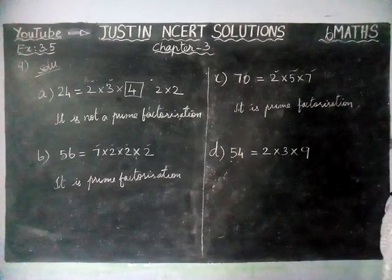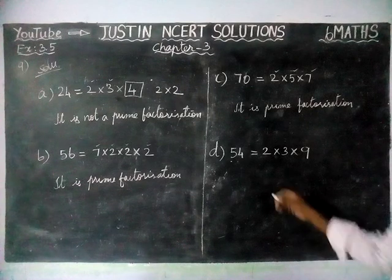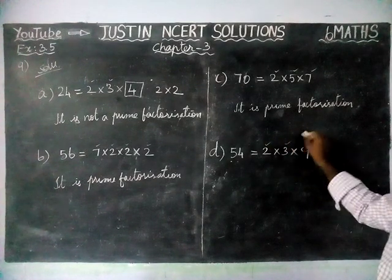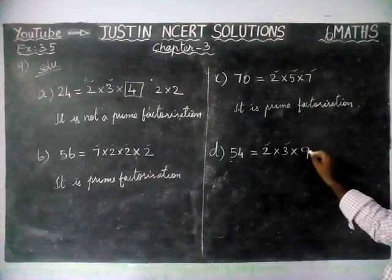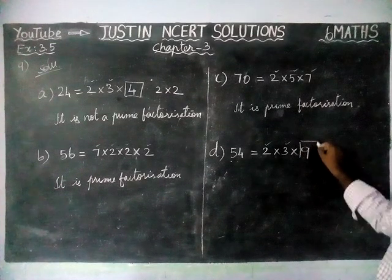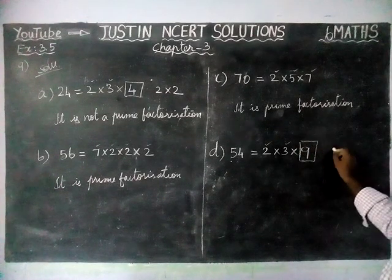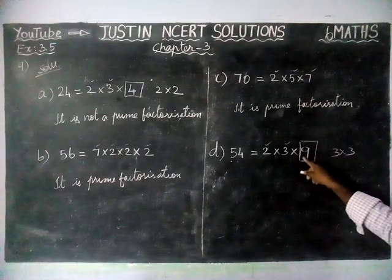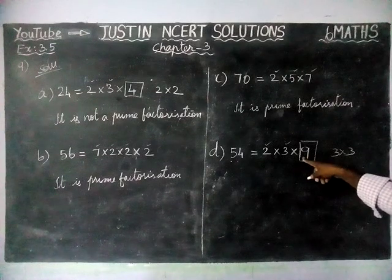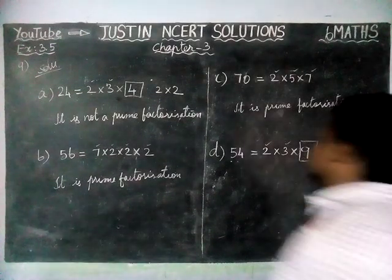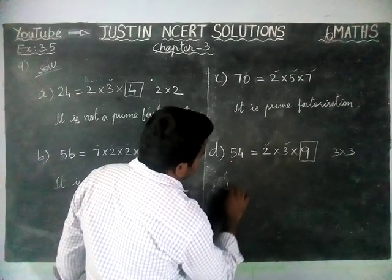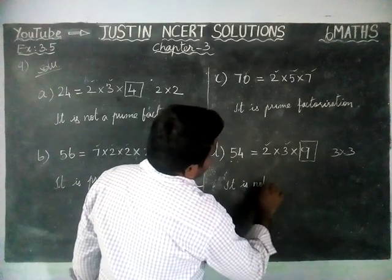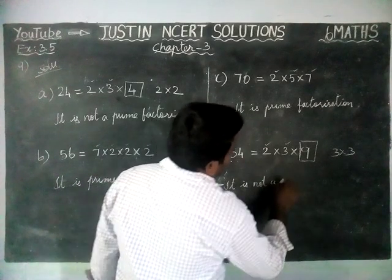Next, we are going to check Option D. Here, 2 is a prime number, 3 is a prime number, but 9 is not a prime number — we can separate it into 3 × 3. Therefore, this is not a prime factorization.